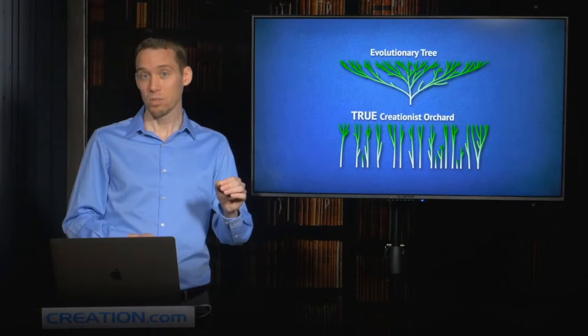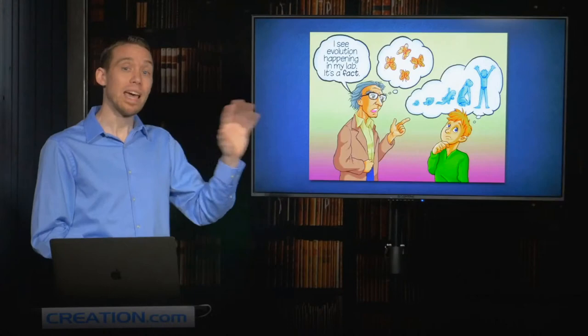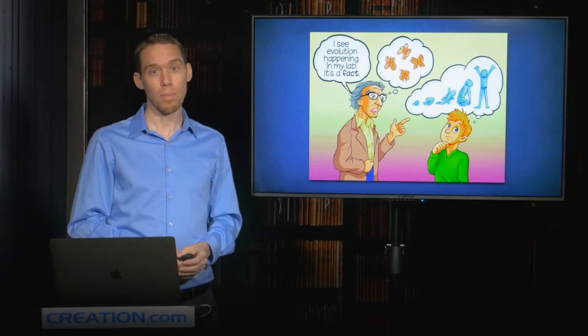Now evolutionists often confuse the issue by using the word evolution in multiple ways, switching the meaning mid-argument. For instance, you might have some evolutionary professor say to his students, how can you deny evolution? I can see evolution happening in the laboratory. But what's he observing in his lab? It's variations on a theme. Minor changes within butterflies, for example. And yet what he's trying to convince his classroom of is that microbes can turn into mankind over millions of years. It's not enough to simply point to any and all changes. We need to distinguish between the types of changes that we're observing.